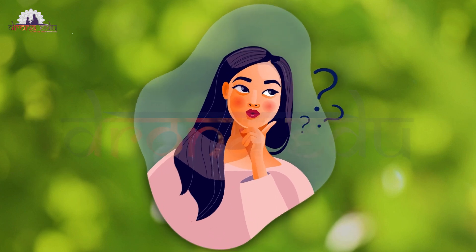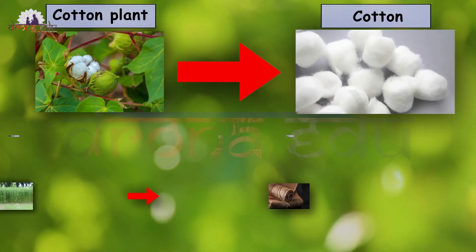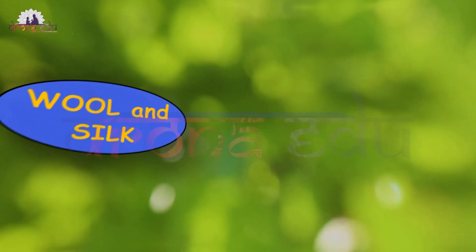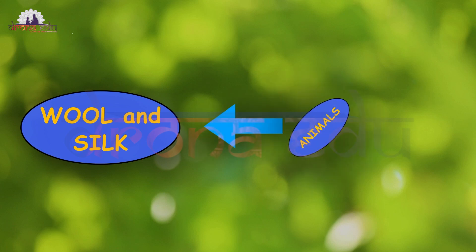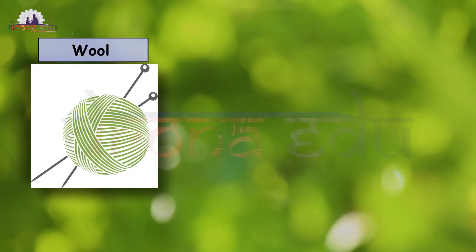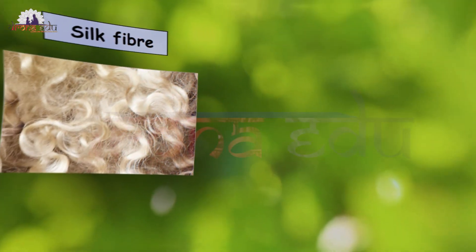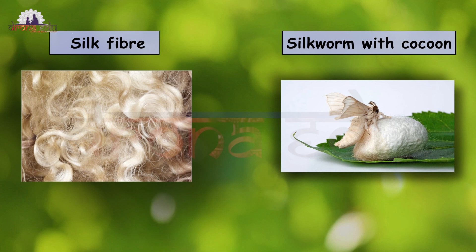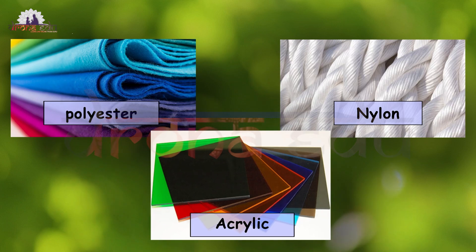Have you ever wondered where these fibers come from? Fibers like cotton and jute are obtained from plants, while wool and silk are obtained from animals. Wool is obtained from the fleece of sheep, and silk fiber is drawn from the cocoon of the silkworm. These fibers obtained from plants and animals are called natural fibers.